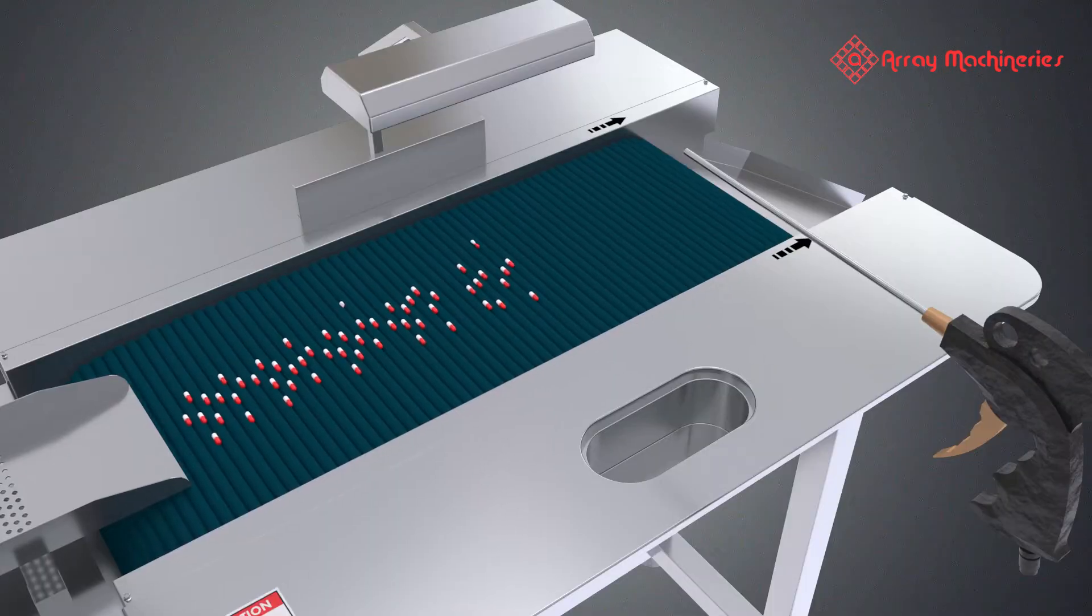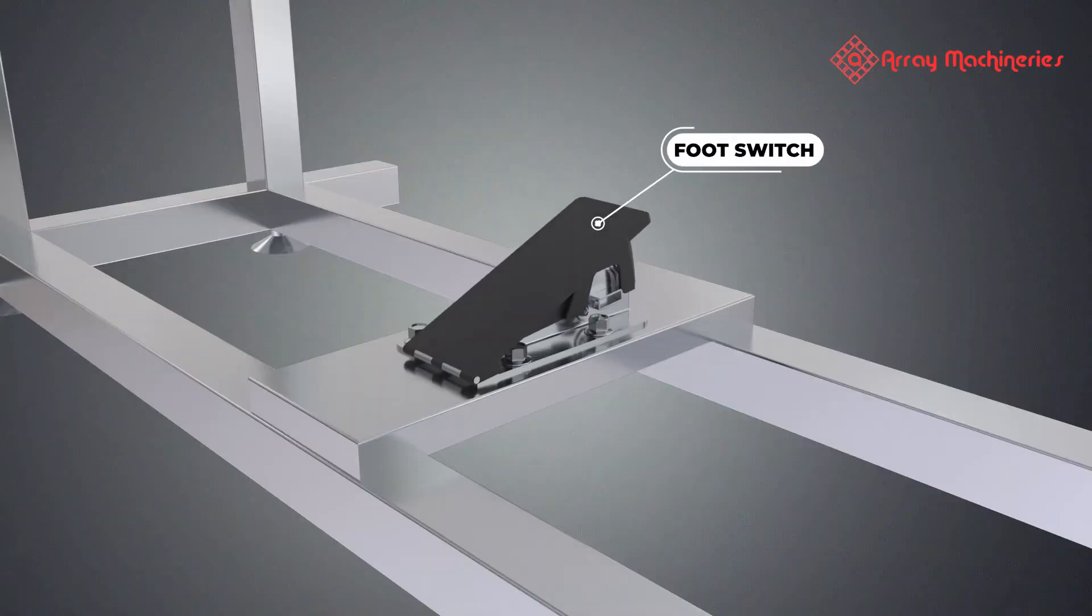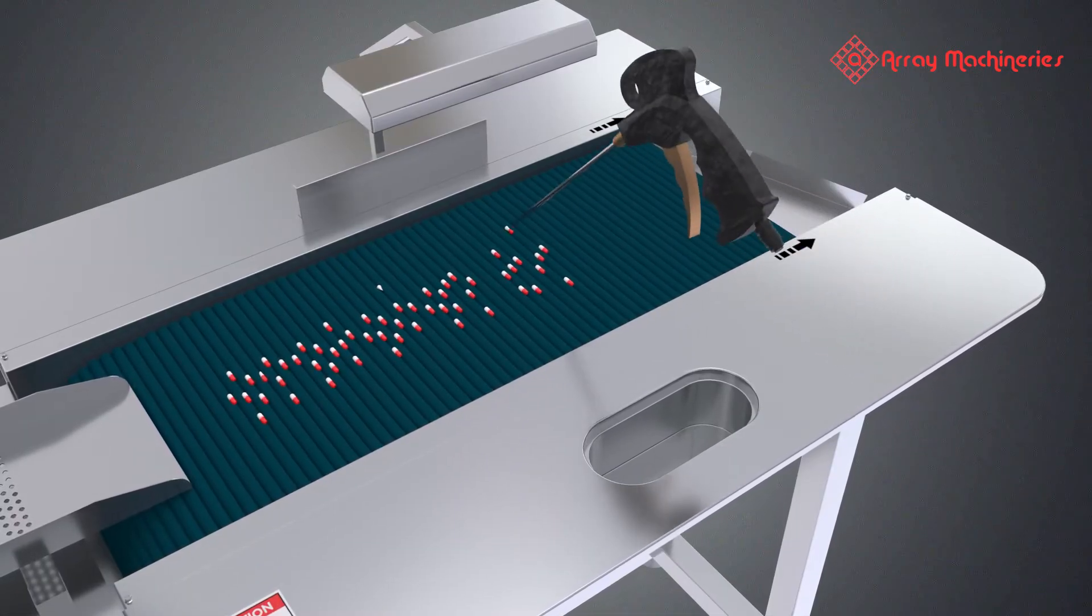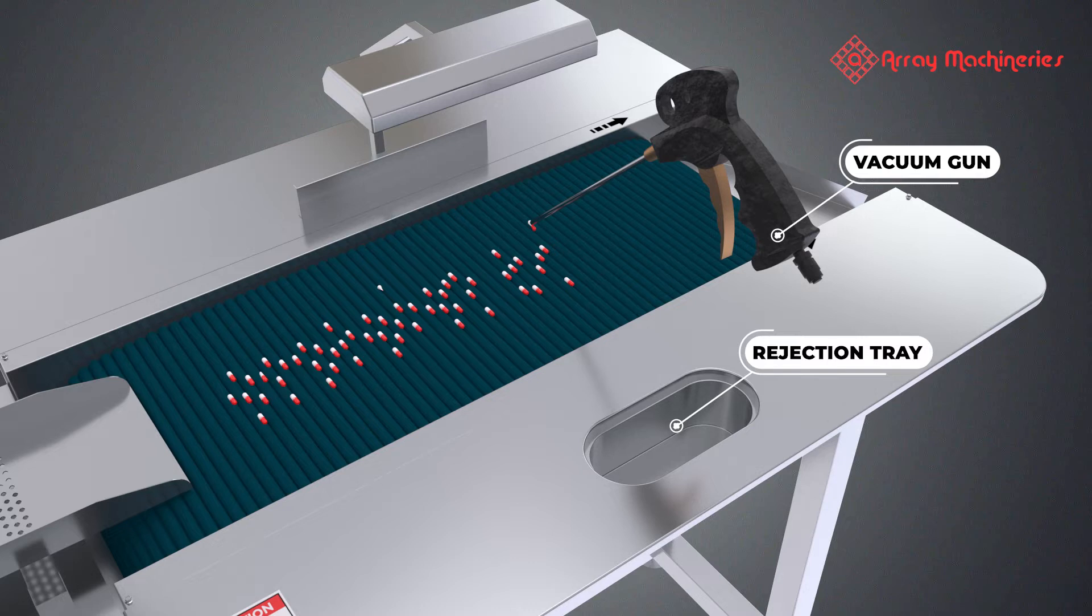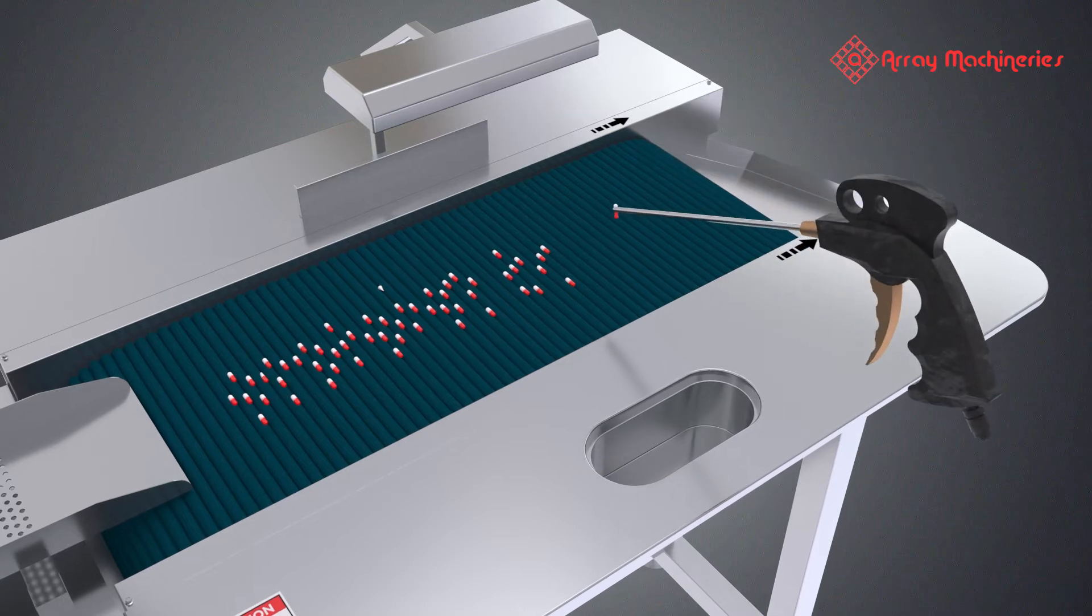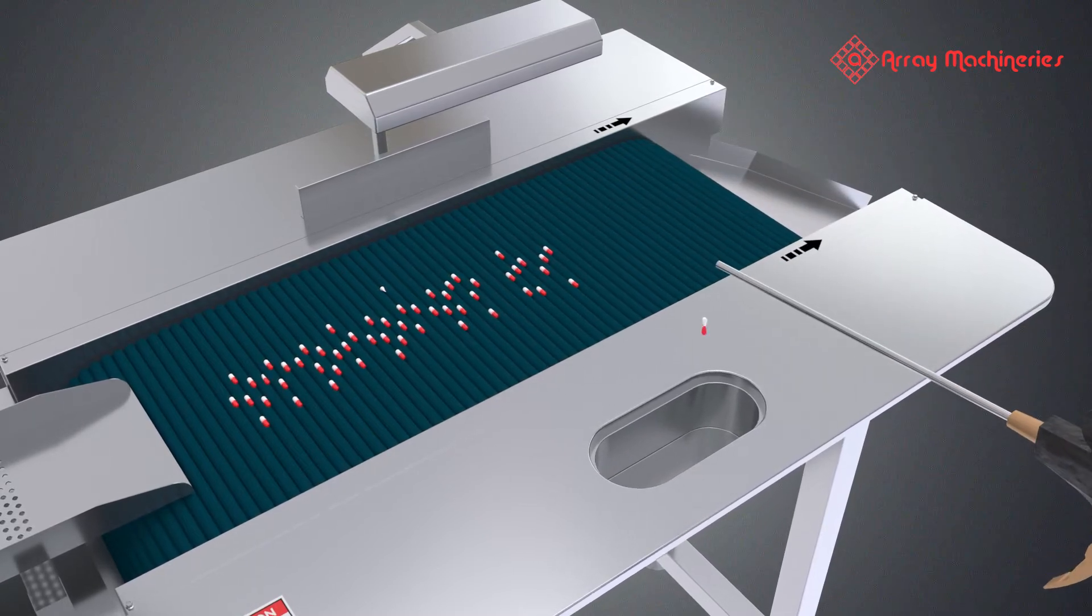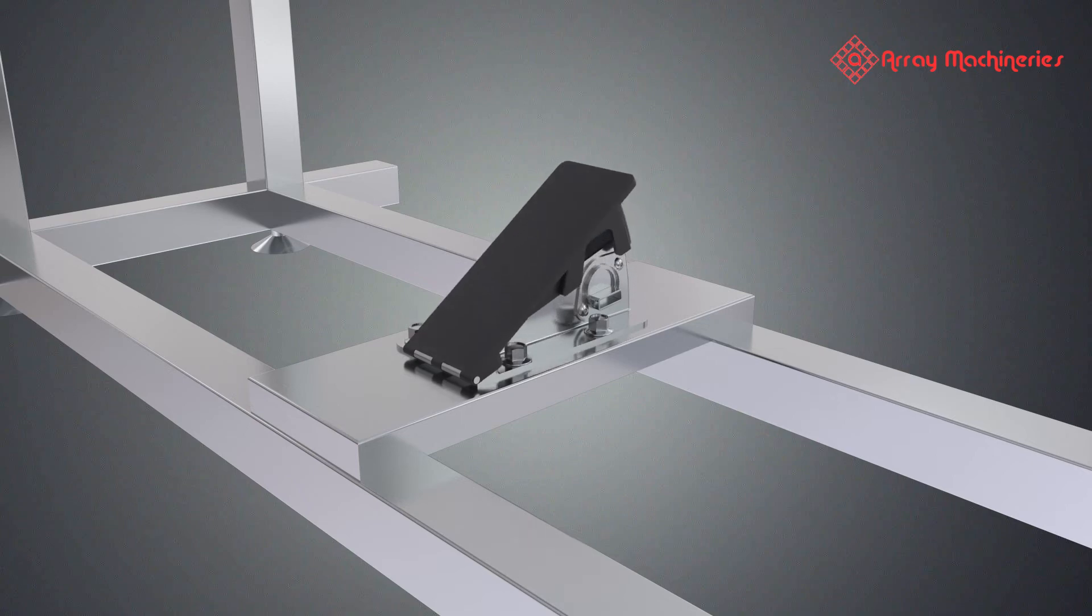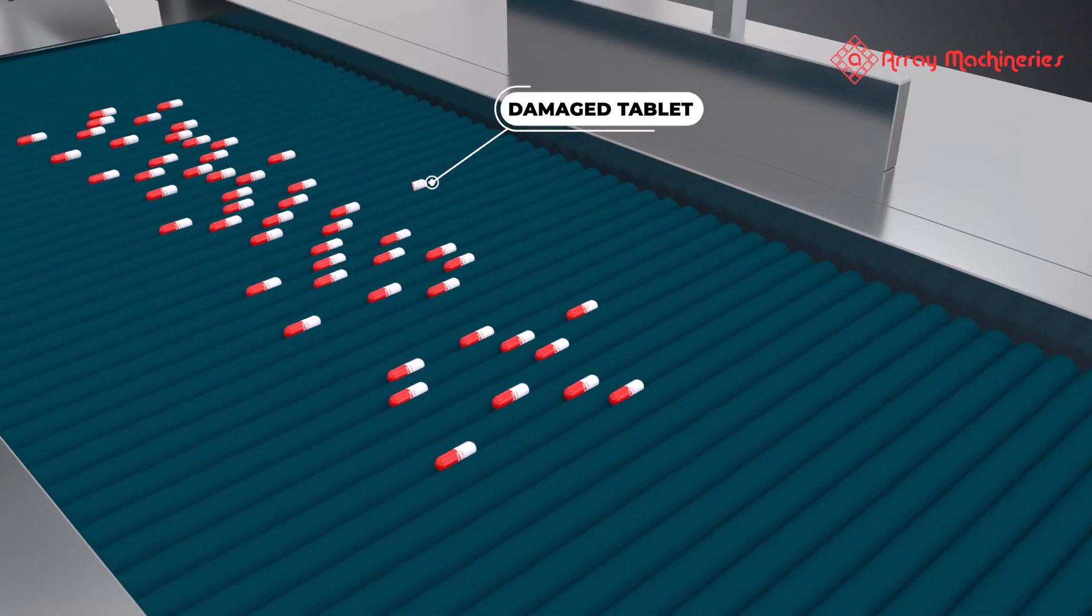In case of any defect found, the operator presses the foot switch to temporarily stop the machine to remove the tablets. Once the operator releases the foot switch, the machine automatically starts again.